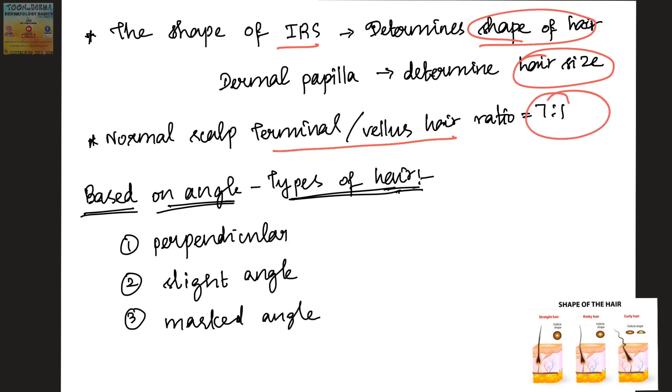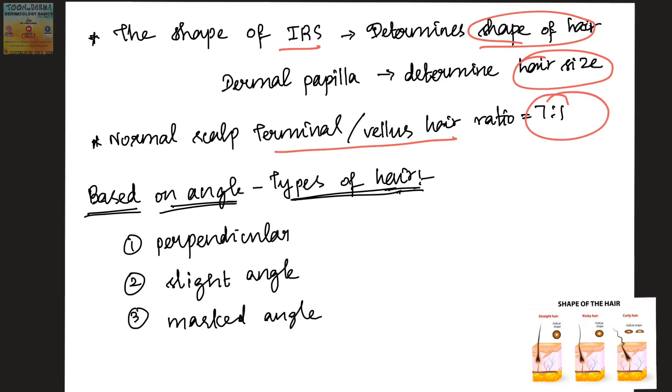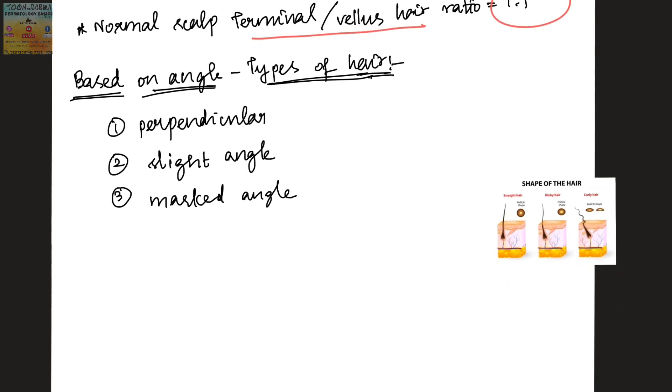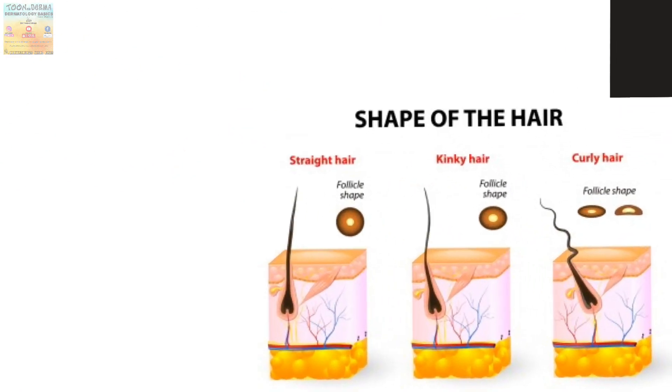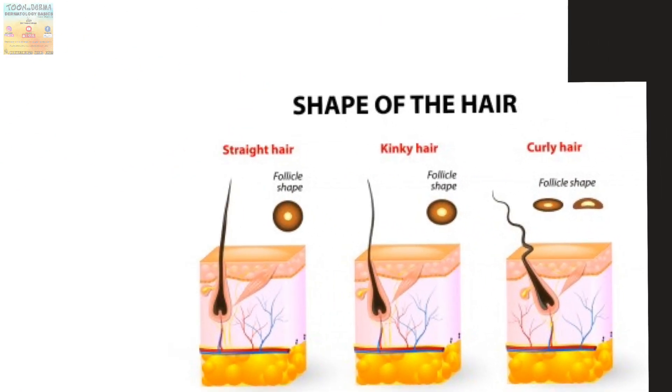Based on the angle, the types of hair include perpendicular, slight angle, and marked angle. Different types of shapes of hair include straight hair, kinky hair, and curly hair.